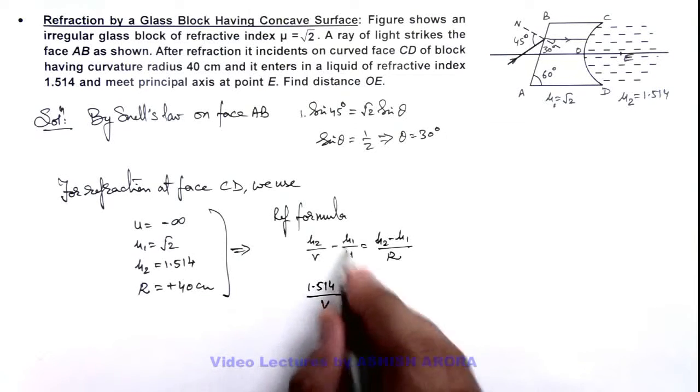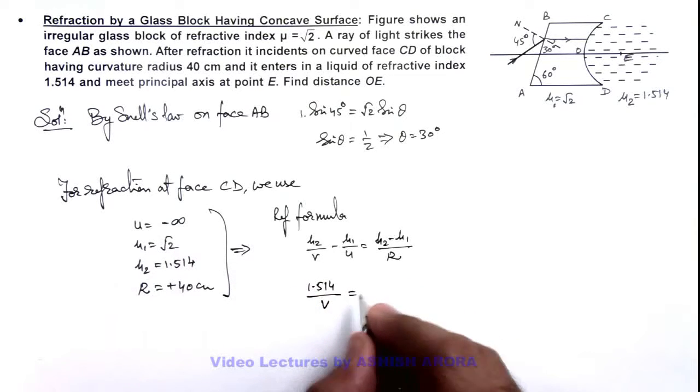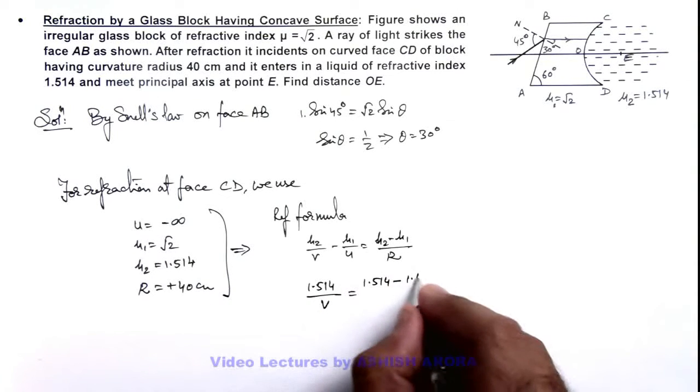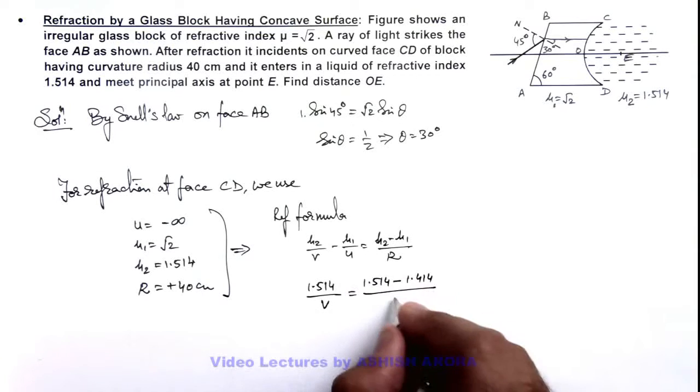This term will vanish as u is infinity. This is equal to 1.514 minus root 2, which can be written as 1.414, divided by r is 40. So this can be written as 0.1 by 40.